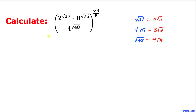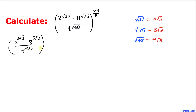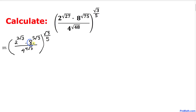Now let's substitute these simplified exponent values back into our expression. We can write it as 2 power 3 times square root of 3, times 8 power 5 times square root of 3, divided by 4 power 4 times square root of 3, then whole power square root of 3 divided by 5. Now let's focus on base 8, which can be written as 2 power 3.